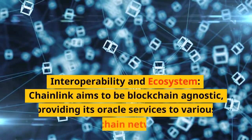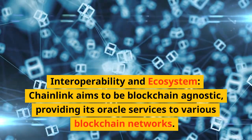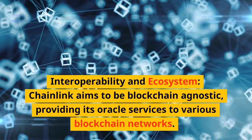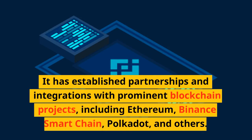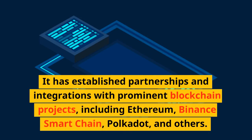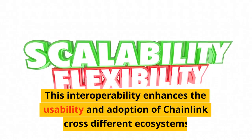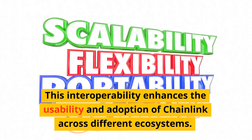Chainlink aims to be blockchain agnostic, providing its oracle services to various blockchain networks. It has established partnerships and integrations with prominent blockchain projects, including Ethereum, Binance Smart Chain, Polkadot, and others. This interoperability enhances the usability and adoption of Chainlink across different ecosystems.